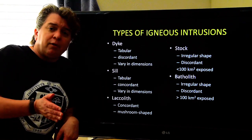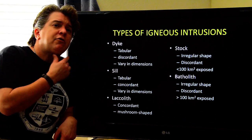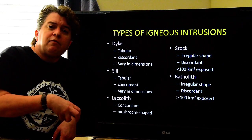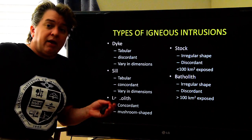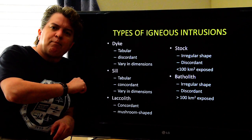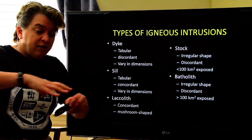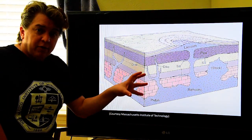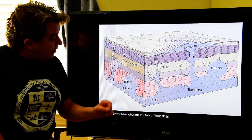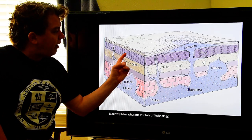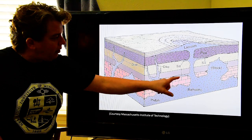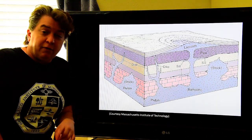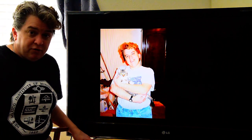The main difference between a stock and a batholith is size. If you've ever gone to Yosemite National Park in California, you are standing in the middle of the Sierra Nevada Batholith — a big area of igneous rock. Enchanted Rock is part of a batholith as well. On the test, you'll be given a diagram without labels and you'll need to identify: a dike cutting across country rock, a sill running parallel, a mushroom-shaped laccolith, a stock, and a large batholith.